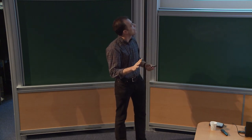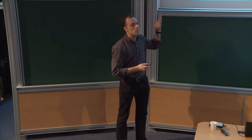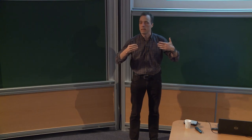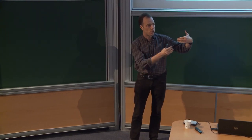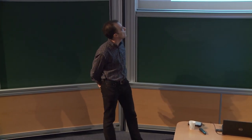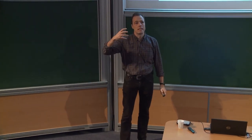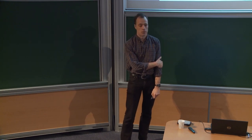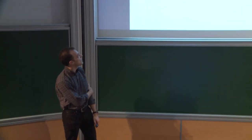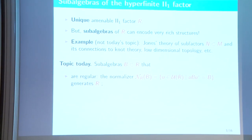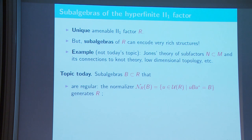Something I won't be talking about today, but that you may know, is Jones' theory of subfactors — a whole world of considering inclusions of the hyperfinite II₁ factor sitting in one way or another inside the hyperfinite II₁ factor, with all the connections to all kinds of fields. But today's topic rather will be sub-algebras that behave differently. We will be looking at sub-algebras satisfying a certain normality property, called regular — they were called regular by Dixmier. Regularity means that the normalizer of the sub-algebra, consisting of all unitaries that normalize it under conjugacy, generates the entire algebra in the von Neumann algebra sense.